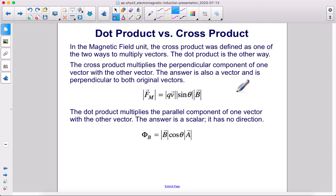Let's quickly compare dot products and cross products. In the magnetic field unit, the cross product was defined as one of the two ways to multiply vectors. The dot product is the other way. The cross product multiplies the perpendicular component of one vector with the other vector. The answer is also a vector and is perpendicular to both original vectors.